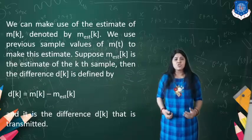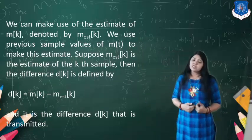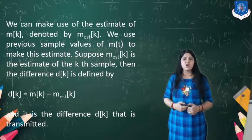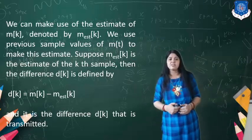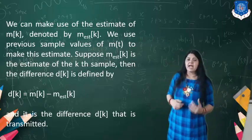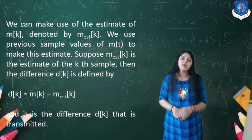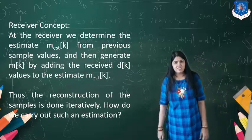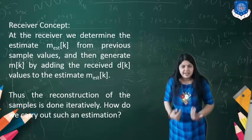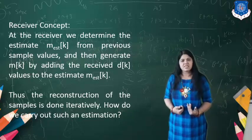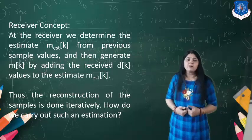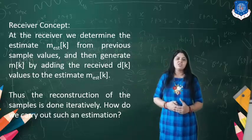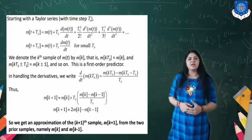We use an estimate of Mk, denoted M-est(k), based on previous samples. Then Dk = Mk − M-est(k), and this Dk value is transmitted. At the receiving end, we again determine the estimated value from previous samples and then generate Mk by adding all received Dk signals, allowing us to reconstruct the signal.